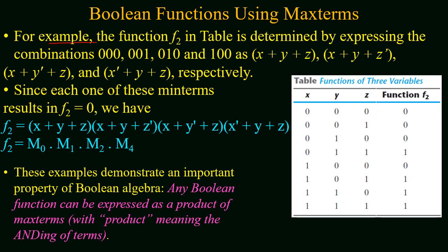For the second example, we construct a function consisting of max terms. Observing the given truth table, we identify all binary combinations for which the output function has a value of 0. We find that for binary combinations 0,0,0 and 0,0,1 and 0,1,0 and 1,0,0 the output variable has a function value of 0. We will make max terms for these binary combinations. For binary value 0,0,0 the max term will be x+y+z.